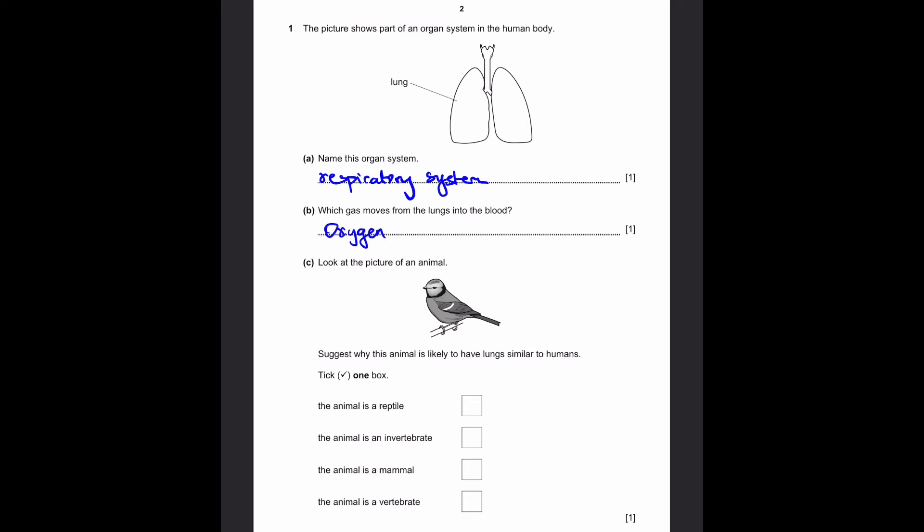Part C: Look at the picture of an animal. Suggest why this animal is likely to have lungs similar to humans. We can clearly see that this animal is a bird, and the only thing they share with humans in terms of properties is that the animal is a vertebrate. Birds are vertebrates. The only feature that birds share with humans, which is given in this list, is that it is a vertebrate. So the only reason why this animal could have lungs similar to humans is the fourth option here: the animal is a vertebrate. The other three are illogical since they simply don't share that property with humans.